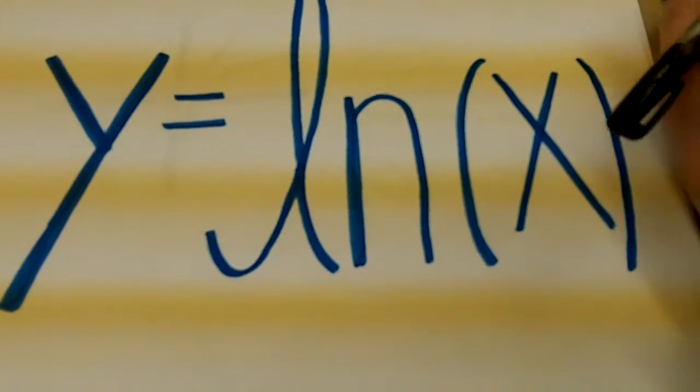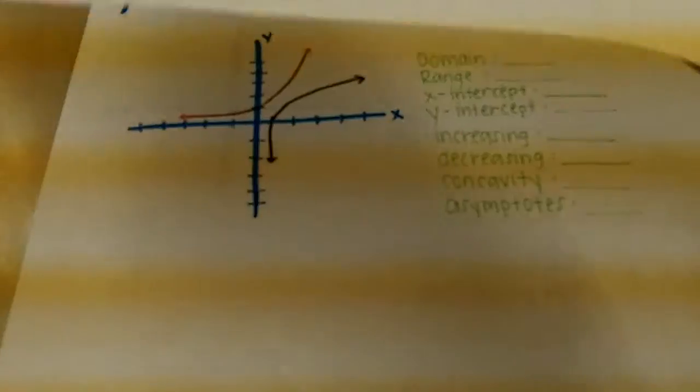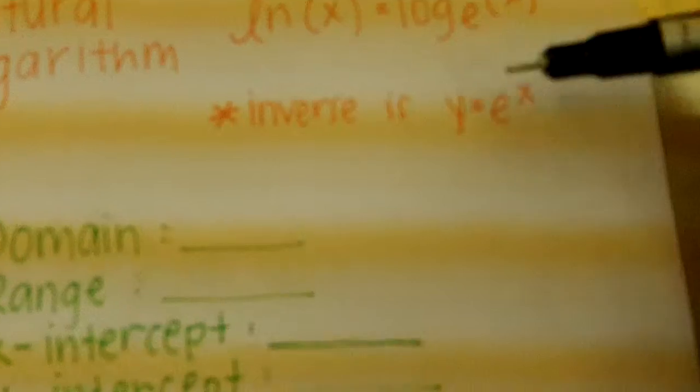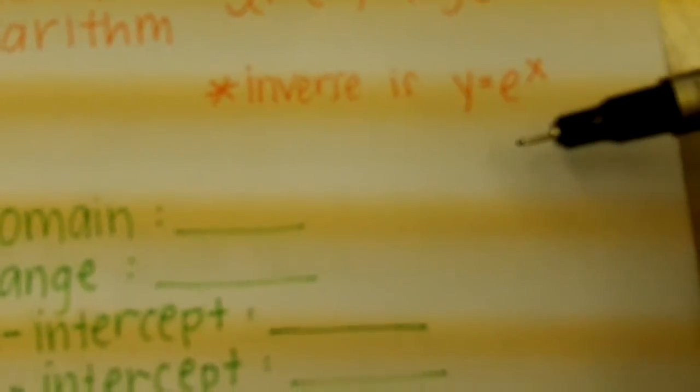I have the function y equals ln of x. It is a natural logarithm, and this is the function for it. It is the inverse of y equals e to the x.